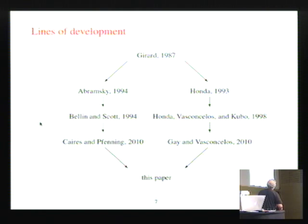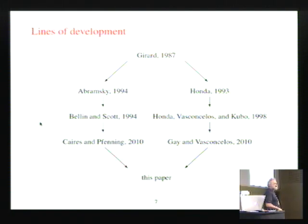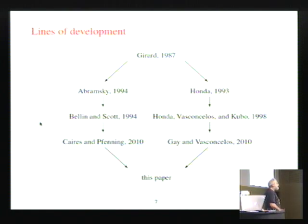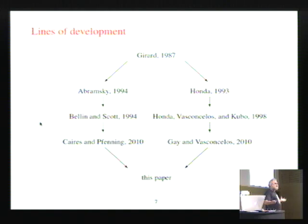This line here means complete silence — nothing happened. Until, in 2010, Caires and Pfenning came up with a really interesting variant of Abramsky's original idea. And what I'm going to do in this paper is make some further improvements on their variant, and then use that to explain the Gay-Vasconcelos language. Because when Caires and Pfenning came up with this, they said look, it's session types. And you could look at it and say yes, that's session types. But they didn't actually do anything formal. So in this paper, we're going to do something formal, and we're going to show how a slight variant of this language maps onto this language.